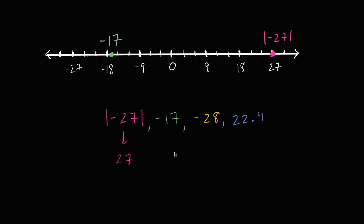And then we have negative 28. So we have negative 27 and each hash mark is 3. So negative 28 is going to be right over there. Negative 28.